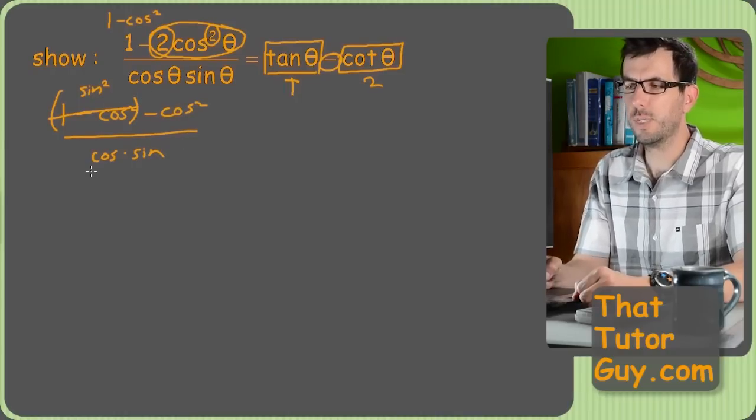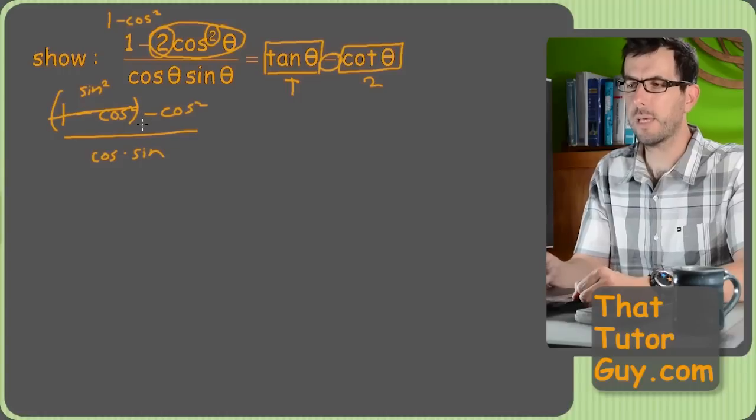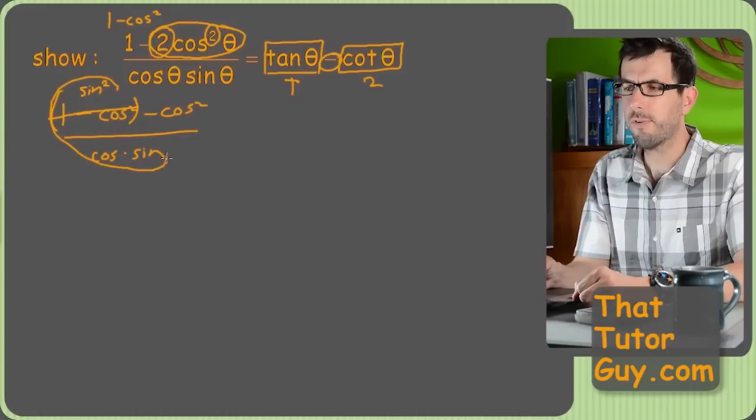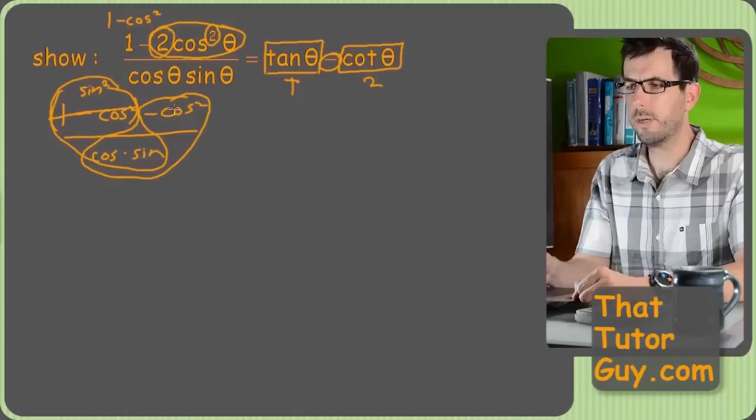So I wonder if the thing I should do is split this into two separate fractions. I can take sine squared over this as one of my terms, and the negative cosine squared over this is my other terms. So I'm going to do that.